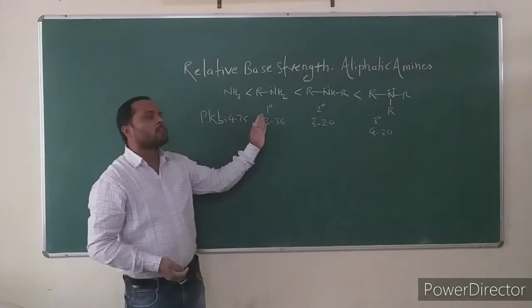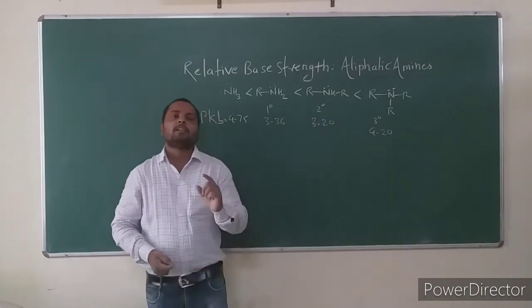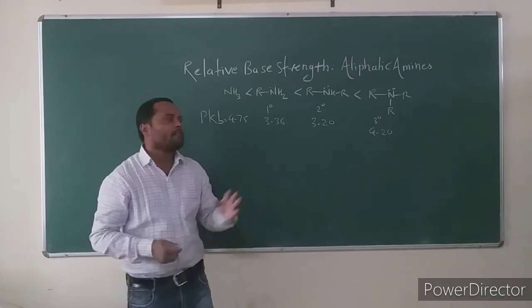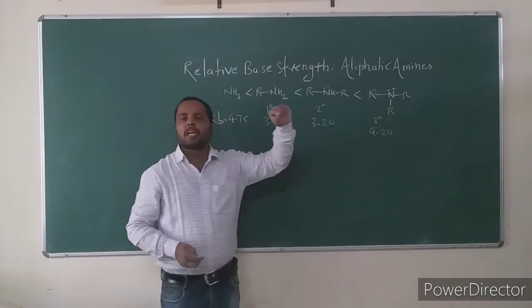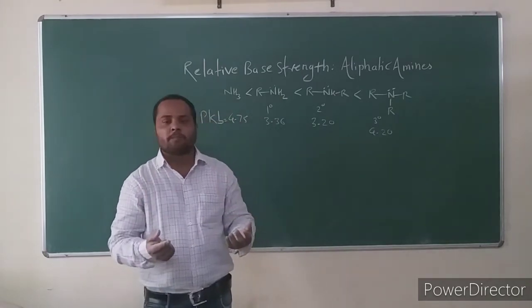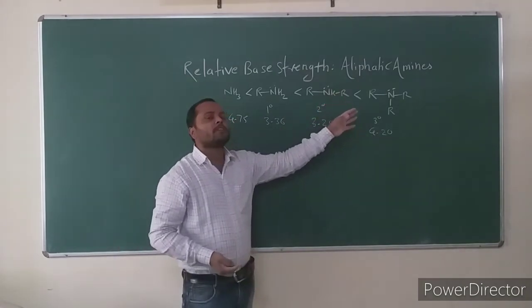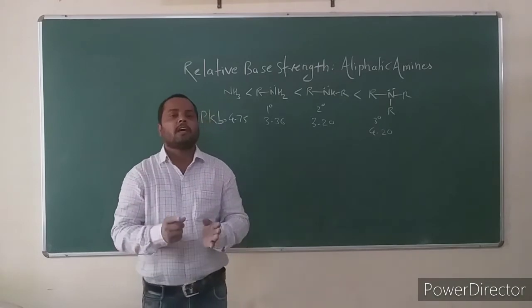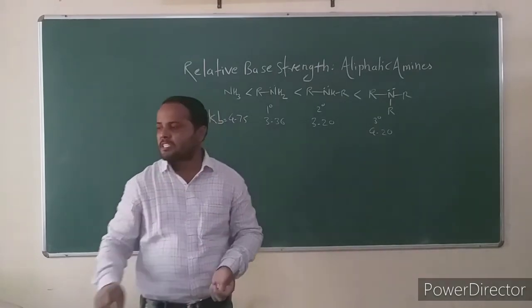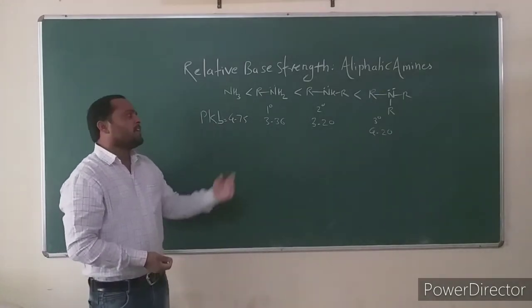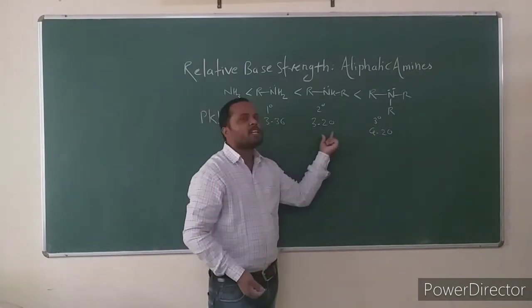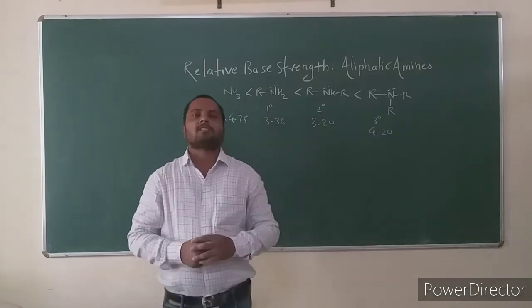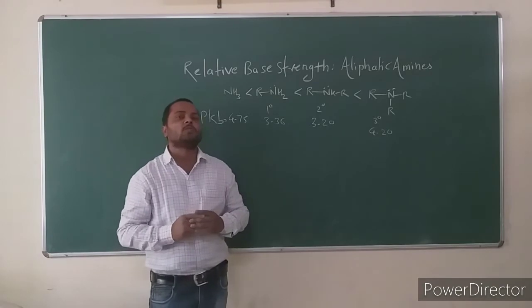As we go from ammonia to primary, secondary, and tertiary amines, the number of alkyl groups increases, so the +I effect increases, electron density around nitrogen increases, and availability of the electron pair increases. Therefore, base strength is expected to increase. However, the pKb value shows that tertiary amine has a higher pKb (4.20) than secondary amine (3.20), meaning tertiary amine is actually weaker than secondary amine.